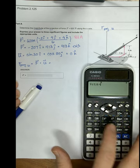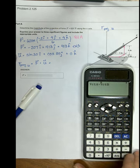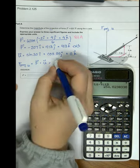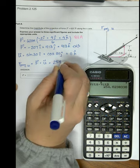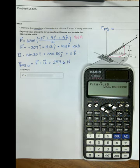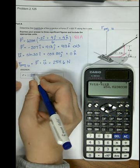...dotted on vector B, which is F dotted on u, and I will get 254.6 units, and that's the answer: 254.6 units.